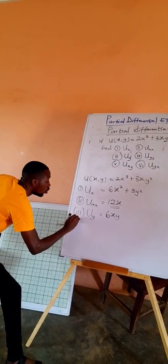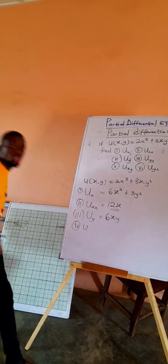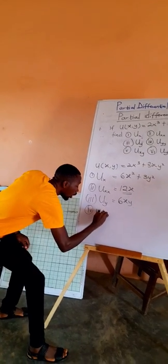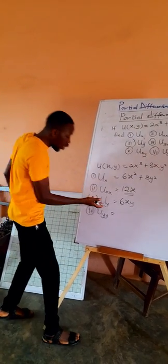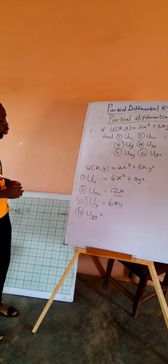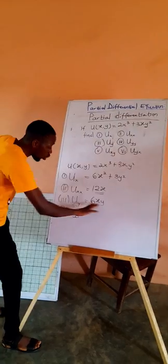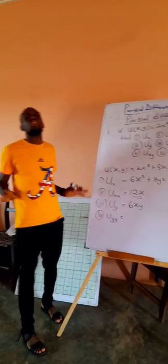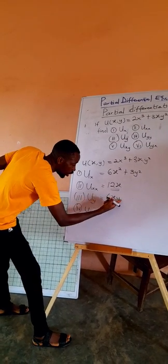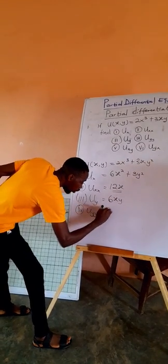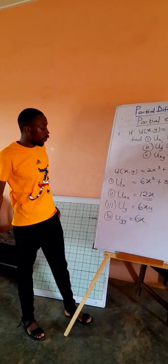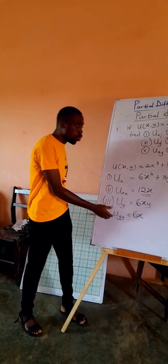Now let's do the partial differentiation of U with respect to y two times — ∂²U/∂y². We differentiate U with respect to y again. Consider any other variable in the equation as constant. The differentiation of a linear term is the coefficient of the variable. So this becomes the partial differentiation of U with respect to y two times.